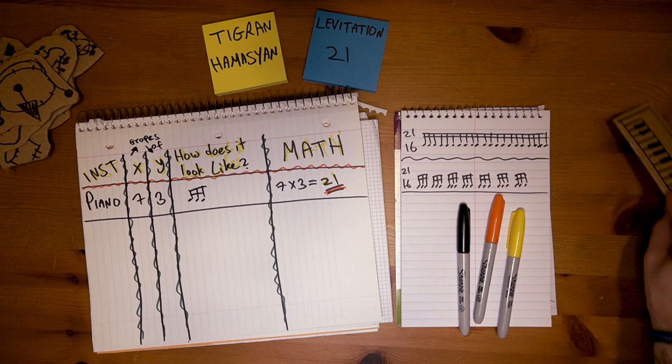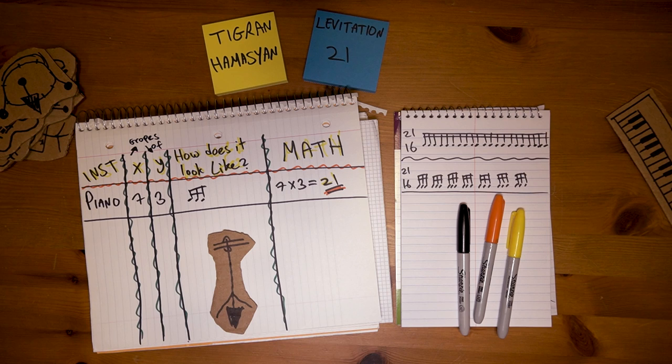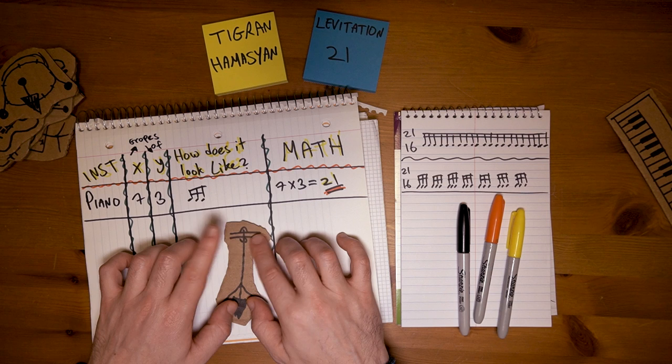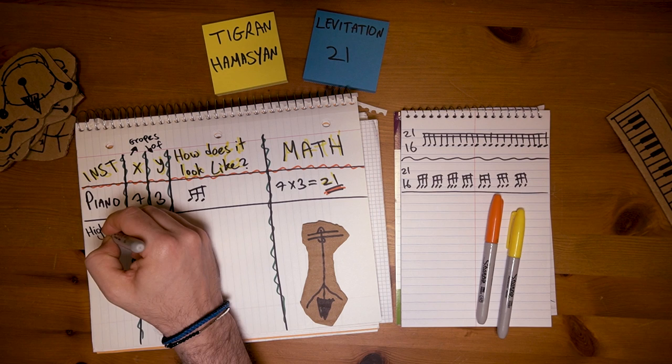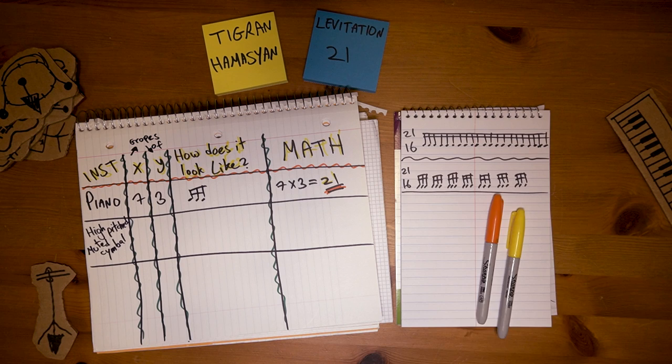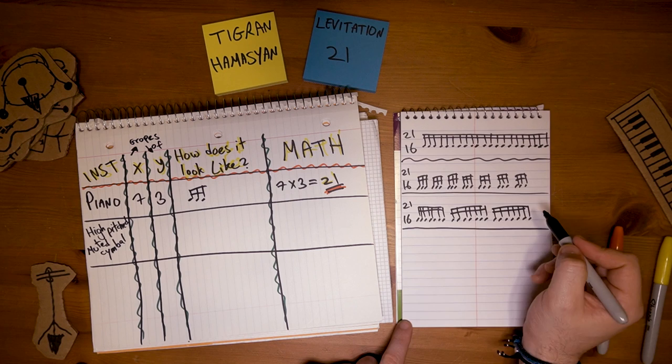Okay, pattern number two. This one is played by that clicky high-pitched muted cymbal. And our beloved 21/16 bar is divided quite symbolically as the opposite of the piano: three groups of seven.